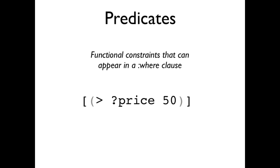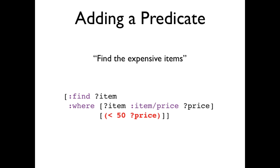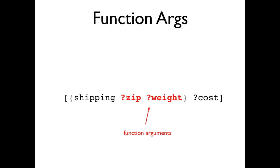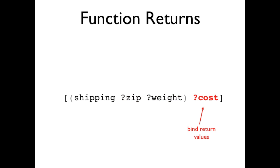Not all queries are exact matches. Often you want to match a predicate, such as the price is greater than 50. Predicates can simply be dropped into a where clause where they further constrain the results returned. You can also call functions from within query. In this example, we have a shipping function that takes a zip code and a weight and returns a cost estimate for shipping a package. A function takes zero or more bound variables as arguments and can bind a variable with its return value.